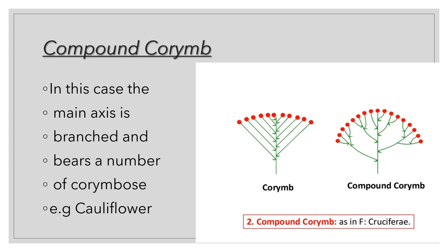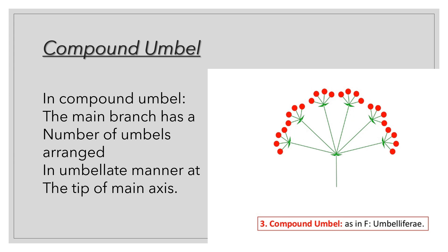Compound corymb is present in cauliflower, which is a family member of Cruciferae. Next we have compound umbel. In compound umbel, the main branch has a number of umbels arranged in umbellate manner at the tip of the main axis. In a simple umbel, all stalks come out from the same point and flowers come at the same level. In compound umbel, branches arise in umbel manner and every branch in turn also has an umbel arrangement. This umbellate manner is a characteristic feature of the Umbelliferae family. Onion is an example of a simple umbel.